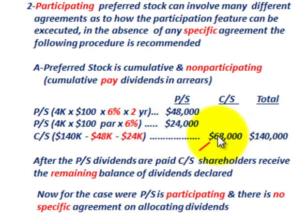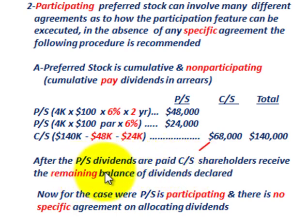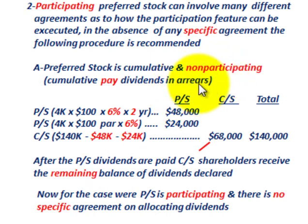To summarize: after the preferred stock dividends are paid, common stock shareholders receive the remaining balance of the dividends declared. They get the total remaining balance simply because the preferred stock is non-participating and doesn't participate in any dividends beyond what's stated on the stock.